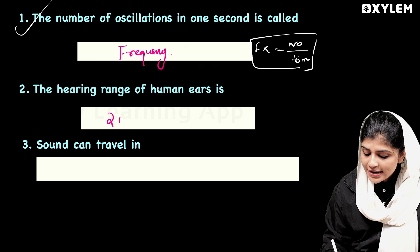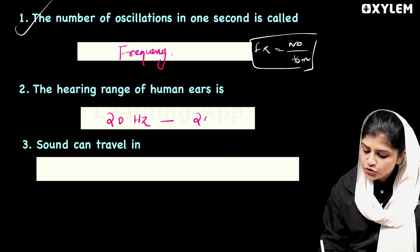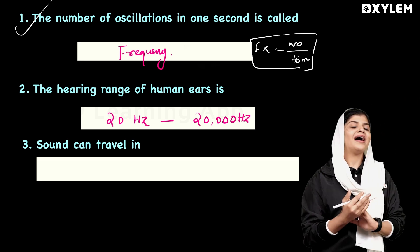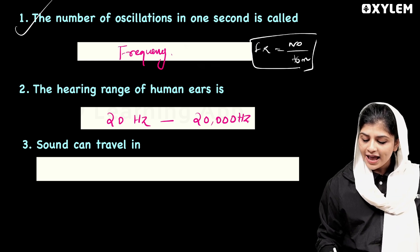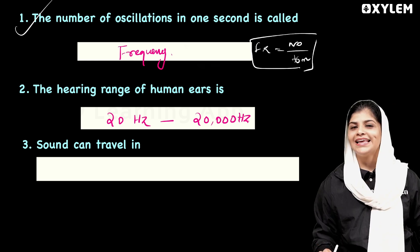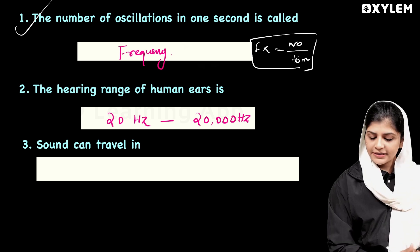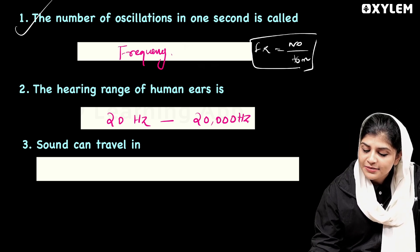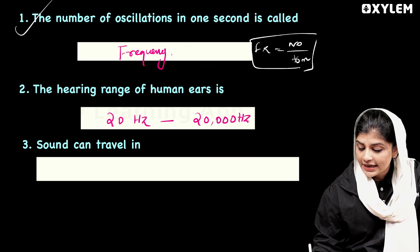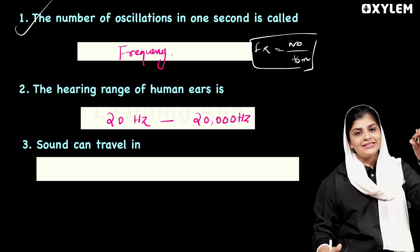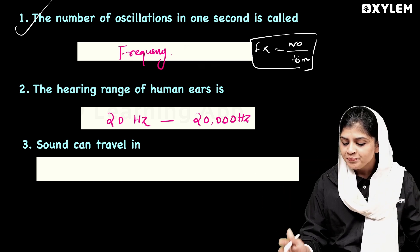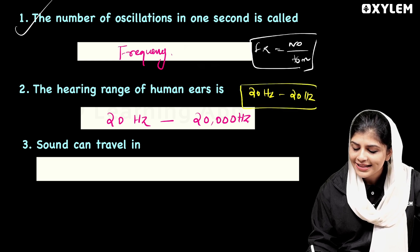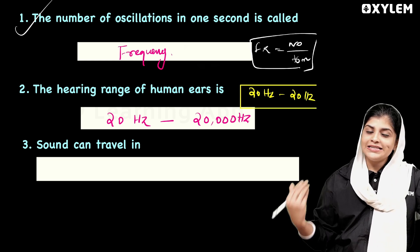The human audible range is 20 Hz to 20,000 Hz. This means we can hear sounds within this frequency range. Hertz is the unit of frequency. There are many frequencies — 20 Hertz to 20,000 Hertz is the human audible range.